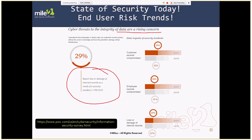We've got to train end users on ransomware because if somebody gets in and has the ability to encrypt your data, that means they had the ability to steal it first, look at it, tamper with it, delete some of it. When we start thinking about end user risk trends — employee records being compromised — I was in Europe recently and they discovered that a former employee had tampered with records when being let go. He was viewed as a work-from-home employee with no manager, no accountability, and he was being paid for seven years. They just now found out, and the guy hadn't actually performed any work.